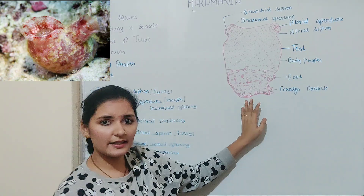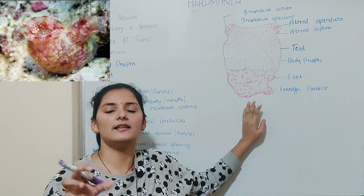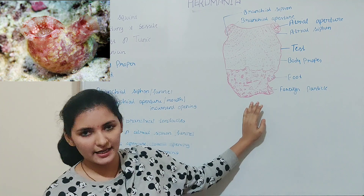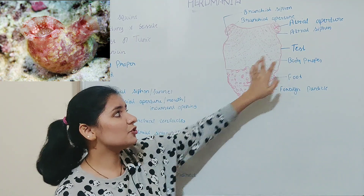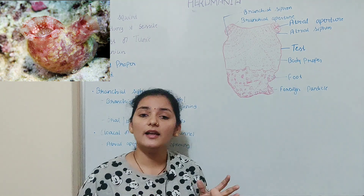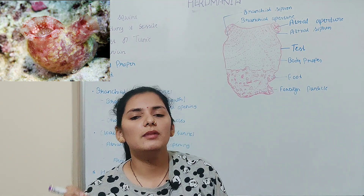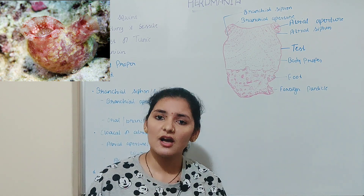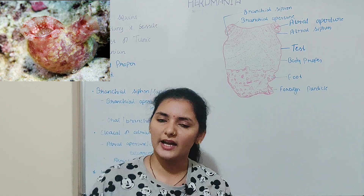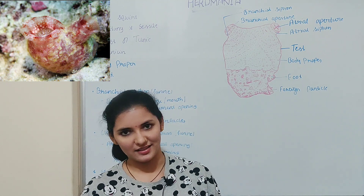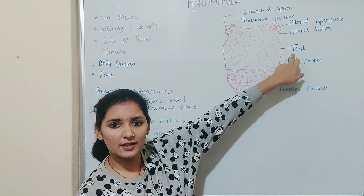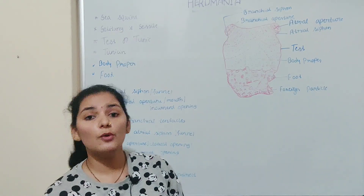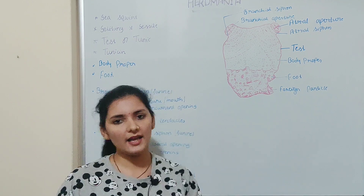The test or tunic layer is transparent in the young animal and it becomes opaque as the animal grows or ages. Due to this transparency, the very minute blood capillaries are clearly visible from the surface, making the fresh specimen or young animal look pinkish in color. The test or tunic is also frequently replaced by a new layer produced by the underlying epidermis.